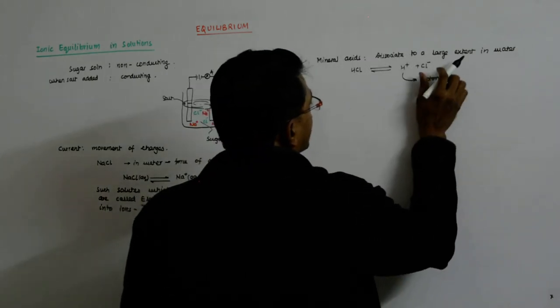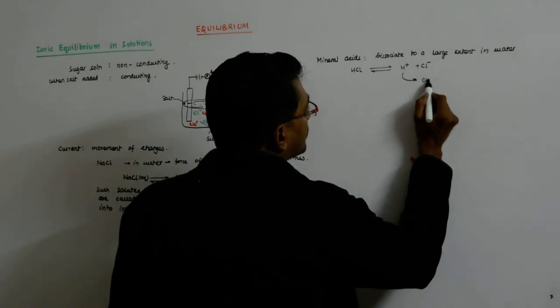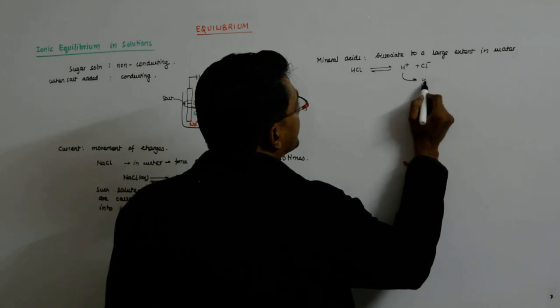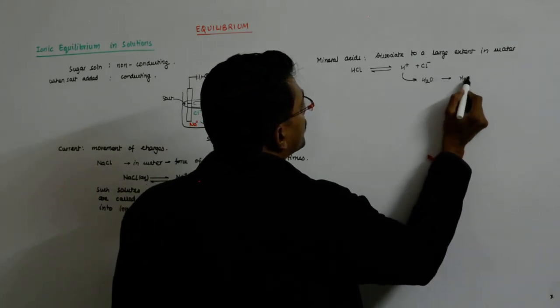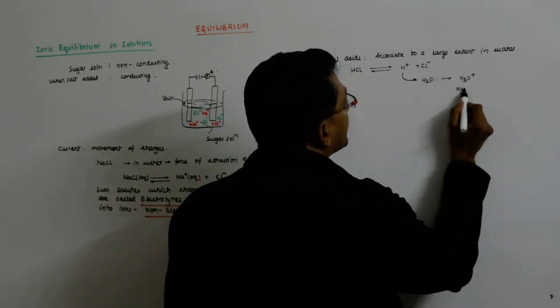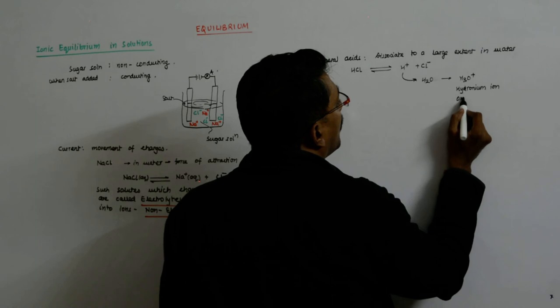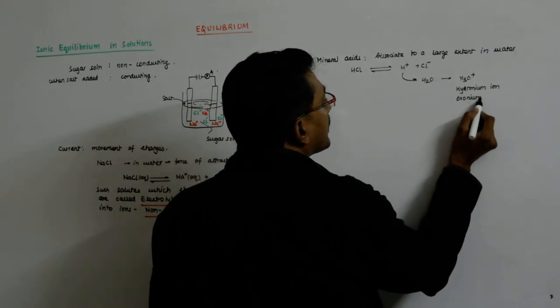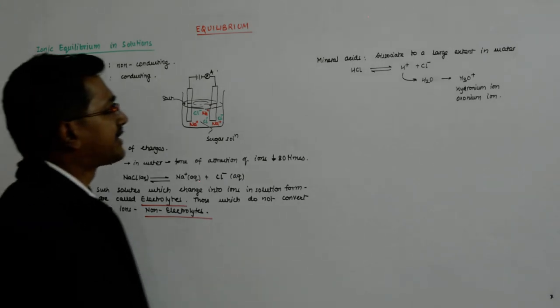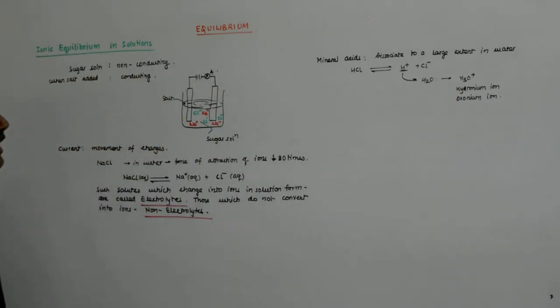In fact, after this, you'll understand that this H plus does not remain like this. It actually reacts with H2O and gives you H3O plus, which is known as hydronium ion, or oxonium ion. It is called both. So it does not exist independently, rather it immediately forms a hydronium ion.